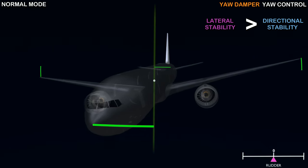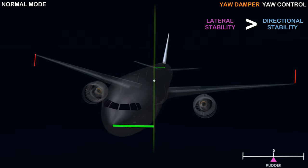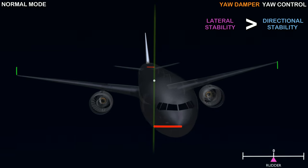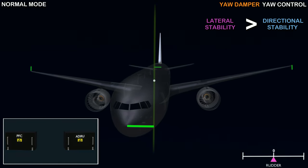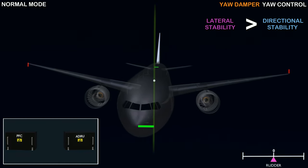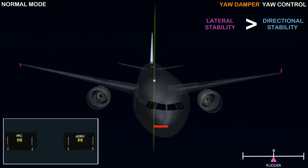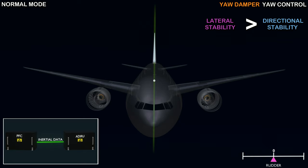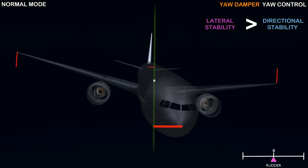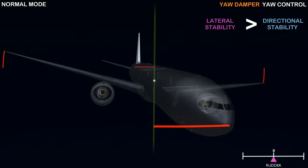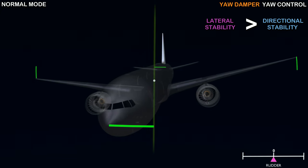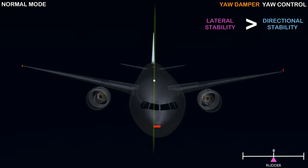The aircraft will eventually recover without any control surface input, but this will create an uncomfortable flight experience. To prevent the dutch roll, the yaw damper software function of the flight computer needs to know the yaw rate of the aircraft. This information is received through the inertial data. When the flight computer notices the aircraft is about to enter the dutch roll, it uses the rudder and prevents the directional and lateral stability from going out of phase. This helps the aircraft recover faster.